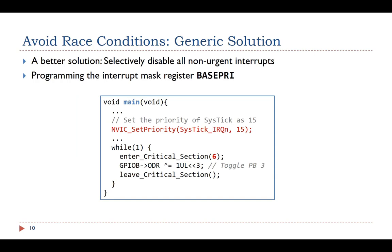In this example, the main function sets the priority value of the SysTick interrupt to 15. The enter critical section function disables all interrupts with a priority value larger than 6. Therefore, if the main function enters the critical section, the SysTick interrupts are disabled until the main function leaves the critical section. Accordingly, accesses to the ODR registers are mutually exclusive.